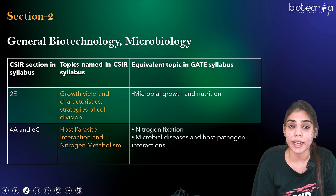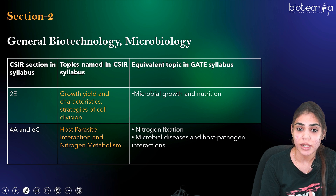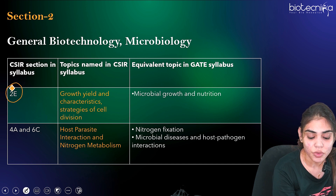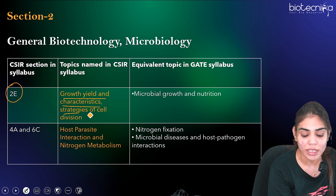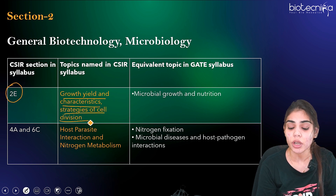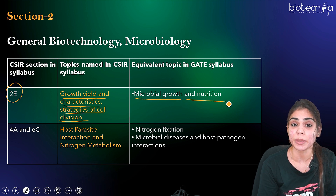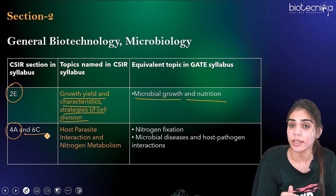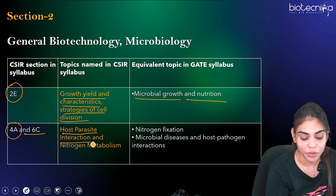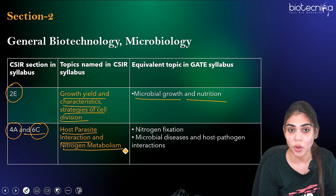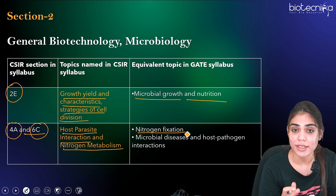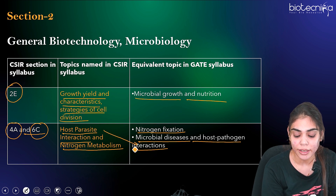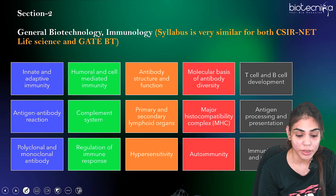Now let's come to the microbiology section of General Biotechnology and see what are equivalent topics under both these exams. CSIR Unit 2E subpart has topics like growth, yield and characteristics as well as strategies of cell division, which is equivalent to microbial growth and nutrition under GATE Biotechnology microbiology syllabus. Also, 4A — cell communication and signaling — includes host-parasite interaction, and 6C includes nitrogen metabolism, which is similar to nitrogen fixation and microbial diseases and host-parasite interactions under GATE Biotechnology.